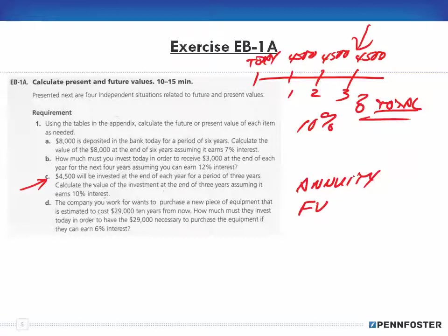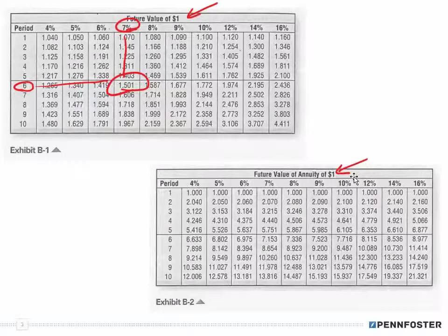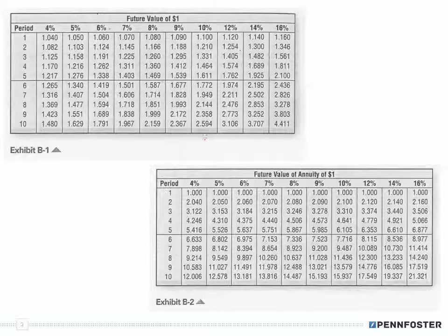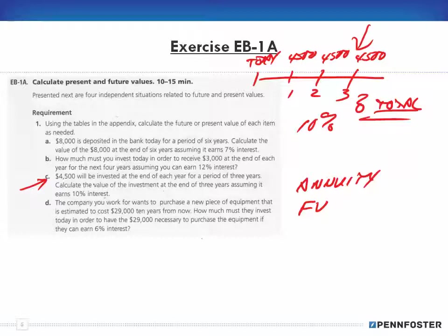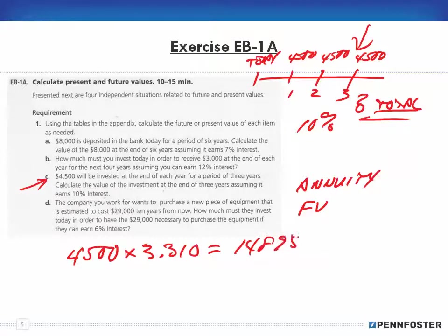Looking at the future value of an annuity table at 10% for three periods, I cross-reference and get a factor of 3.310. Multiplying $4,500 by 3.310 gives $14,895. That is how much I'll have at the end of the third year.